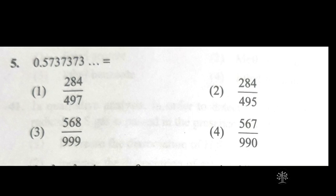You can find similarities among numerator and denominator. For example, consider the denominator. The first option is 497, second is 495, third is 999, and fourth is 990. Now look at the numerator. The first option is 284, and the second option is also 284. So two options have the same numerator. To find the correct answer among first and second option, we take the help of other options.